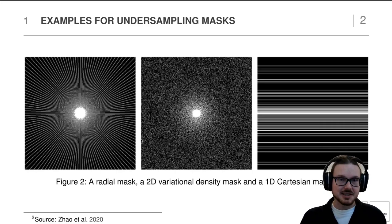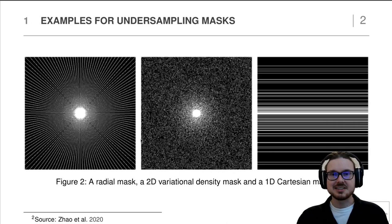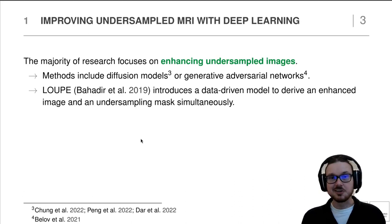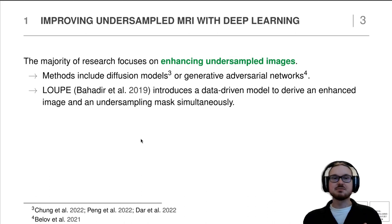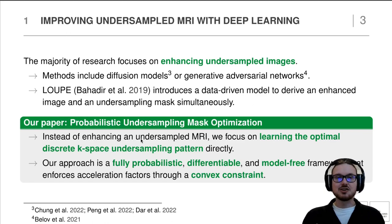These are examples of masks we use — obviously not Batman, so you would typically have something like a radial pattern, a 2D variation density, or a 1D Cartesian mask. There are many patterns applied in MRI reconstruction. The majority of deep learning research focuses mostly on enhancing undersampled images, with most methods using diffusion models or generative adversarial networks. I'd also like to mention LOOP, which introduces a data-driven model to derive an enhanced image and an undersampling mask simultaneously.